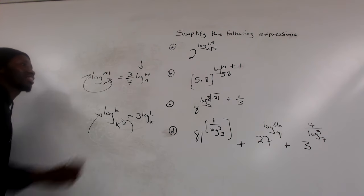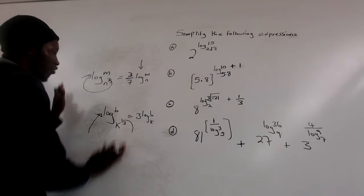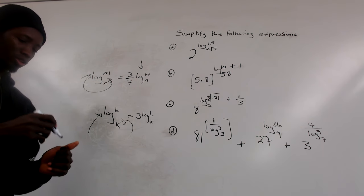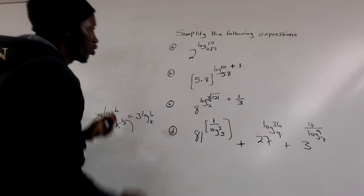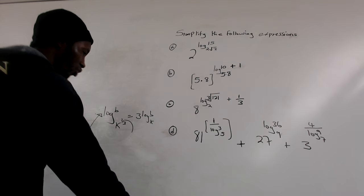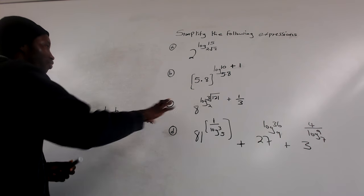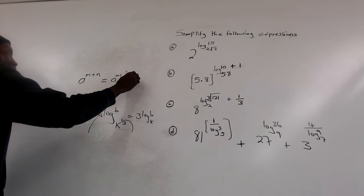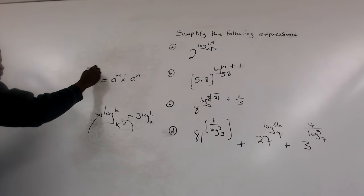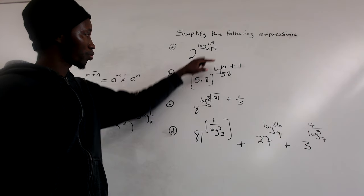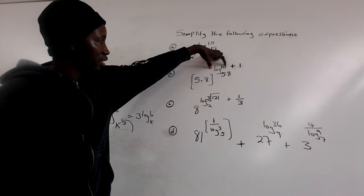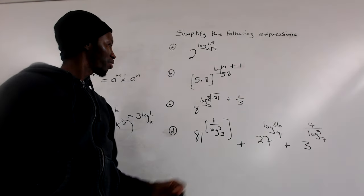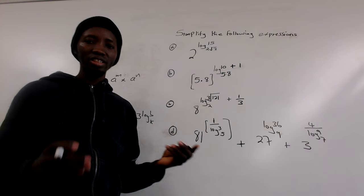These are the tricky parts we need to take note of. With these points you should be able to solve parts a to d. There is one more point: if you have a raised to power (m + n), you can separate the base — since the sign is plus, we multiply them; if it's minus, we divide them. This applies when we have a value like 5.8 raised to power (log 10 + 1), where we separate the two powers.